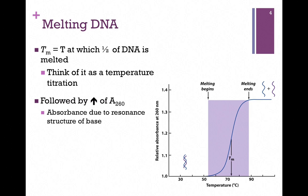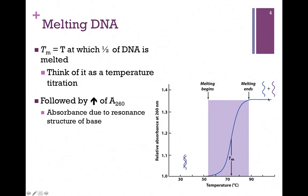The melting temperature is the temperature at which half of the DNA is melted. In our figure from the book, the x-axis shows temperature in Celsius increasing from left to right, and the y-axis tracks the conversion of double-stranded to single-stranded DNA by following the relative absorbance at 260 nanometers. At the far left all DNA is double-stranded, but as temperature rises more molecules separate, and at the top of the curve all DNA is single-stranded. The midpoint of that curve is our melting temperature, where it is half double-stranded and half single-stranded.